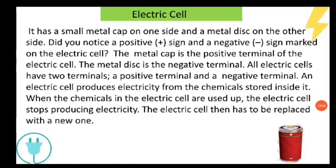Our first topic is electric cell. An electric cell has a small metal cap on one side and a metal disc on the other side. One side has a positive sign and the other side has a negative sign marked. This means that all cells have two terminals which we call positive and negative terminals. The metal cap is the positive terminal and the metal disc is the negative terminal.